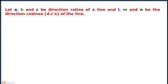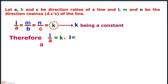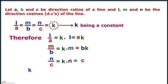Let A, B, and C be the direction ratios of a line, and let L, M, and N be the direction cosines of a line. Then we can say that L by A equals M by B equals N by C equals K, where K is a constant. Therefore, L equals A into K, M equals B into K, and N equals C into K.